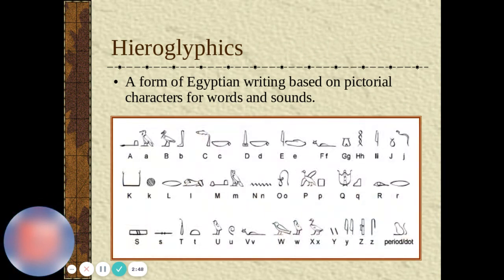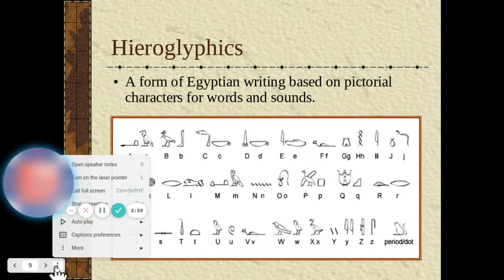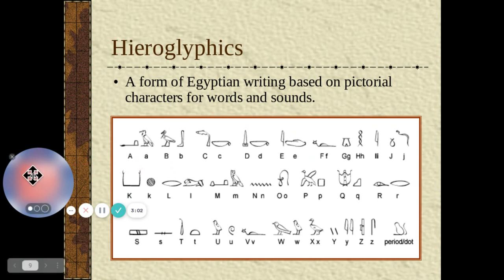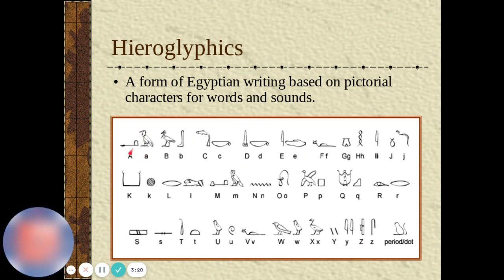Here are hieroglyphics — Egyptian writing based on pictorial characters representing words and sounds. For example, they'll draw a bird with a little feeder symbol: the bird represents lowercase 'a' and the feeder-looking thing represents uppercase 'A.' And then something that looks like a little rat or mouse — that's a period.